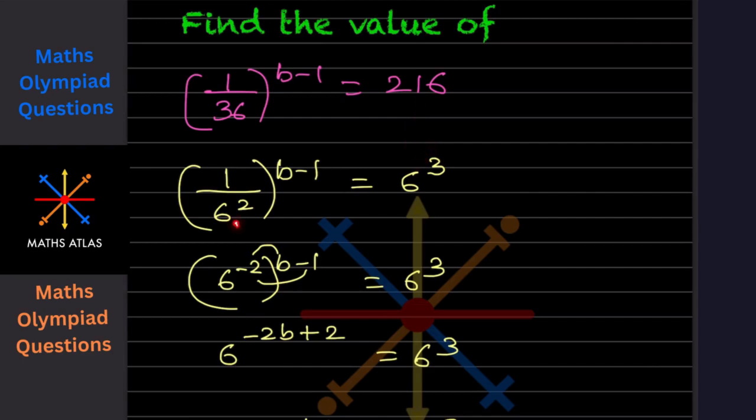Now we can see the base is 6. Let us take this to the numerator. Since this is positive 1, this exponent is going to be negative. We will put a bracket over here.